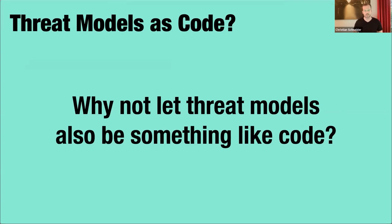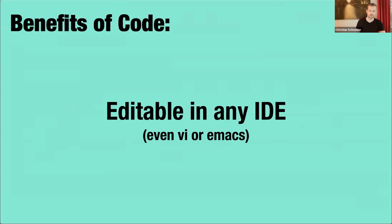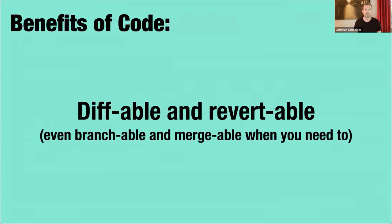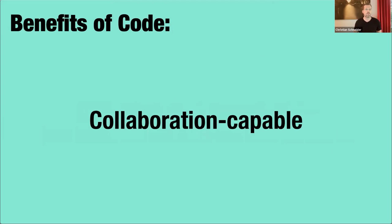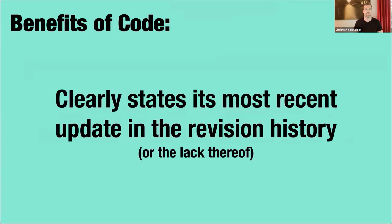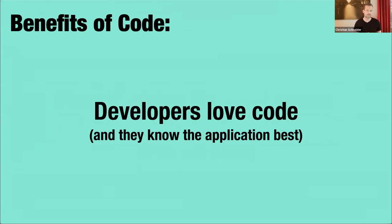The idea was to tackle the same problem — integrating threat modeling into DevSecOps — by automating things as best as possible, and letting threat models also be something like code. The benefits of code: it's edited in any IDE, even vi if you want; checked into the source tree, living along with a project; you can diff it, revert it, it's branchable and mergeable. Therefore it's collaboration-capable, testable, verifiable, reproducible, and it clearly states the most recent update in the revision history.